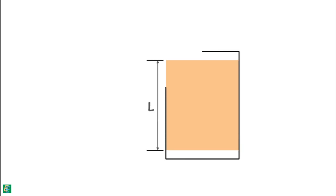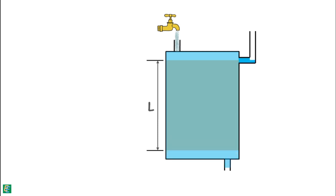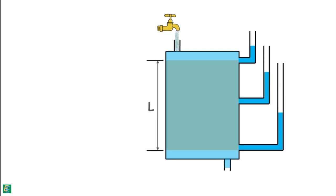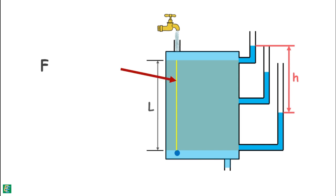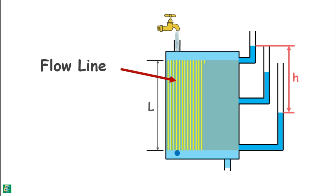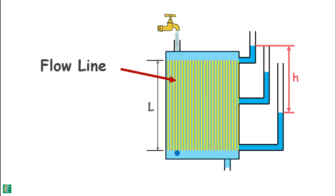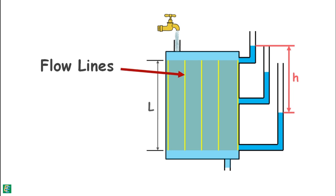Let us consider a soil sample of length L and put it into a glass cylinder. We attach the top of the cylinder to a water source and let the water flow through the soil and exit from the bottom. We also attach a few piezometers at different depths. Water flows vertically downward under a head difference of H. Any water particle that enters the soil at the top moves vertically downward, and the path taken by this water particle can be represented by a line called the flow line. Many particles will flow vertically downward, producing an infinite number of flow lines, though for convenience we draw only a few. These flow lines are also called streamlines.